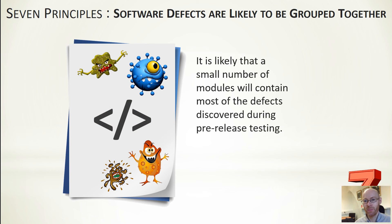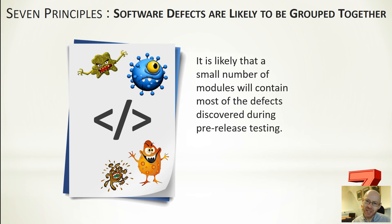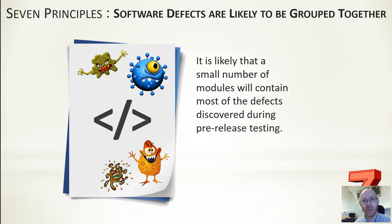Software defects are statistically likely to be grouped together — whenever there are bugs, they are generally found in one area or a small number of particular areas. So if you find a bug in one area, it's good to test that area a little more rigorously to see if anything else comes out as well.